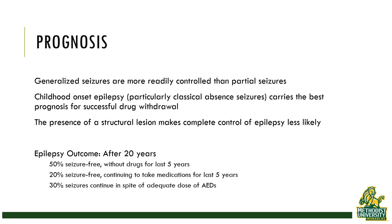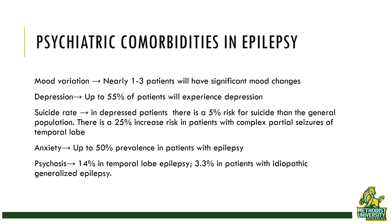It's important to understand that people with epilepsy often have concomitant psychiatric disorders. Many epileptics have mood disorders including depression. Some have fairly rapid mood variations associated with their seizures. There is a much higher risk of suicide in people with complex partial seizures involving the temporal lobe. Anxiety is common, and psychosis occurs fairly frequently in people with temporal lobe epilepsy.